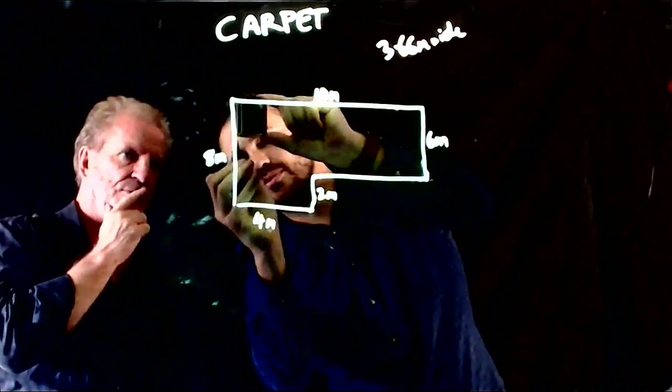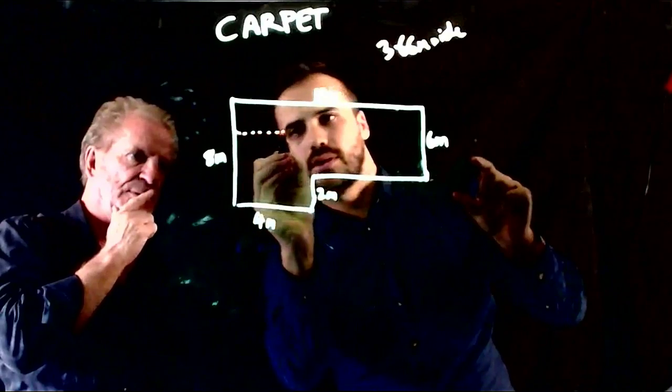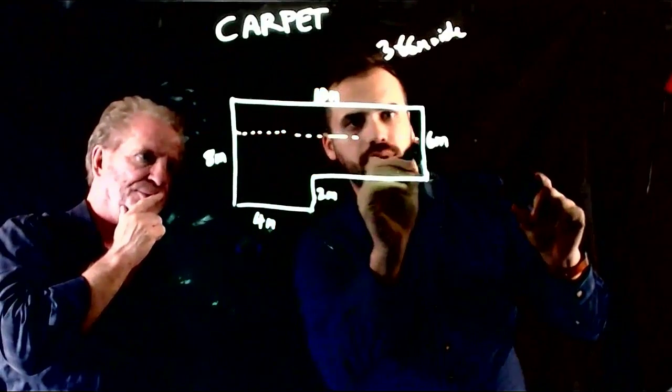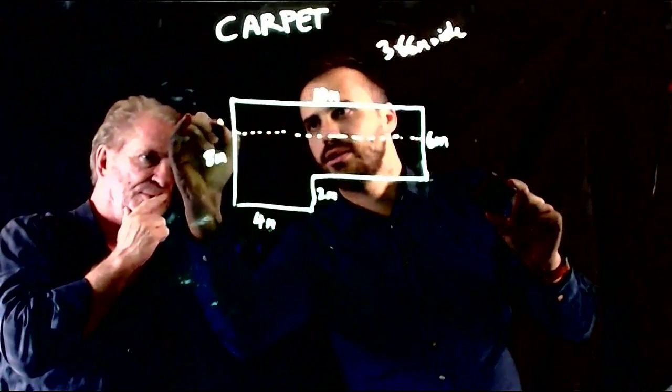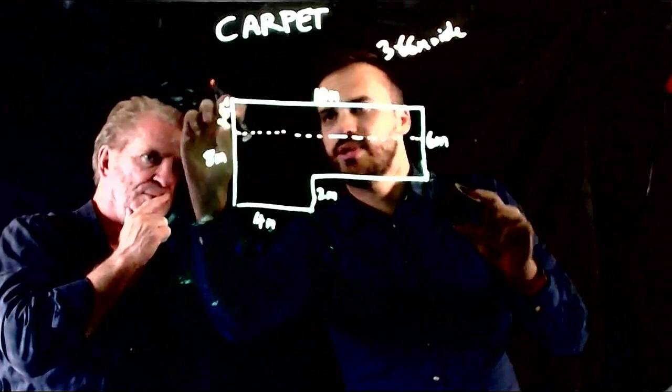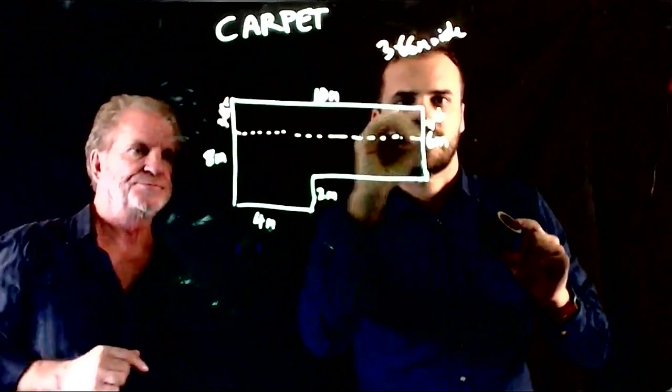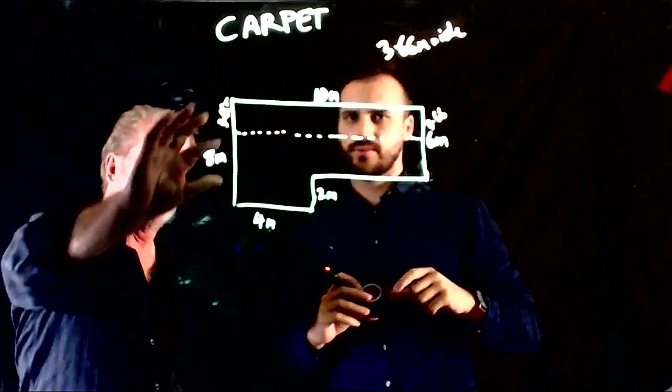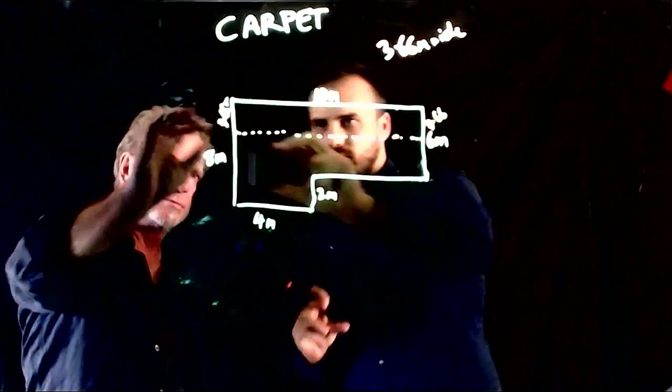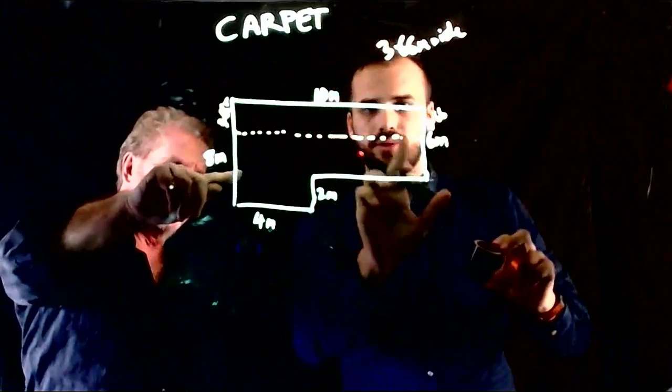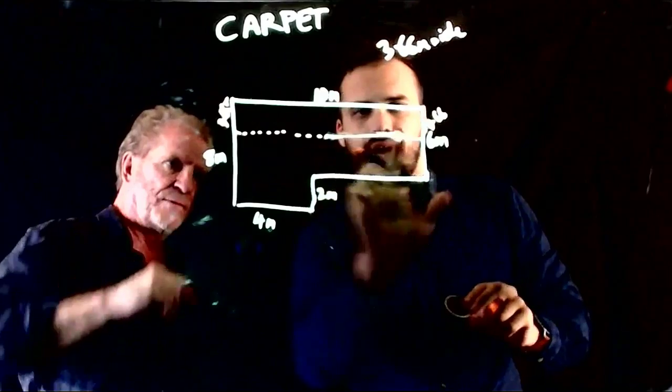So one strip, and that's going to be 3.66 meters from there to there. That's correct, 3.66 meters from there to there. So we roll again. There's one strip. Let's go another one, rolling lengthwise again.